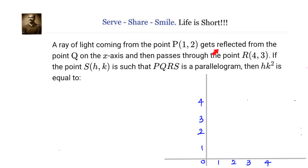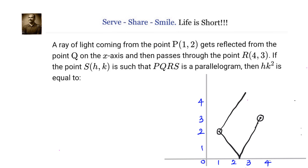A ray of light coming from the point P(1, 2) gets reflected from the point Q on the x-axis and then passes through the point R(4, 3). If the point S(h, k) is such that PQRS is a parallelogram, then hk² equals?